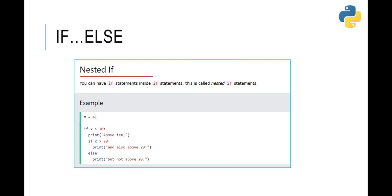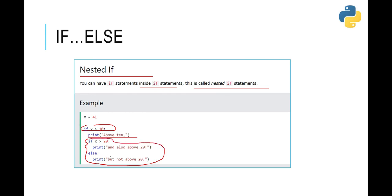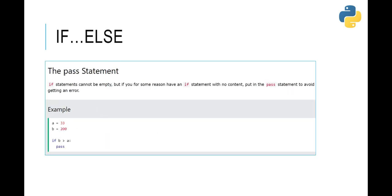The next concept is called nested if. You can have if statements inside another if statement — this is called nested if. In this example we have an outer if statement with its print statement, and then another if statement nested inside. Be careful: the indentation should be proper, otherwise you will get an error. The inner print starts after more spaces than the outer one, reflecting the deeper nesting level.